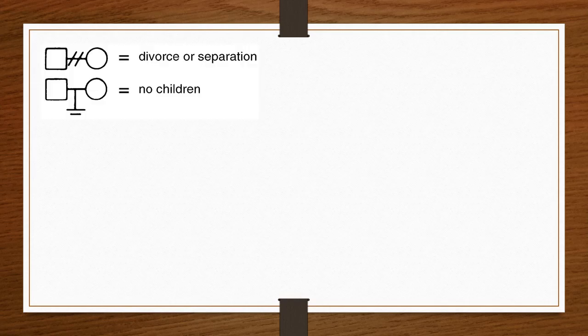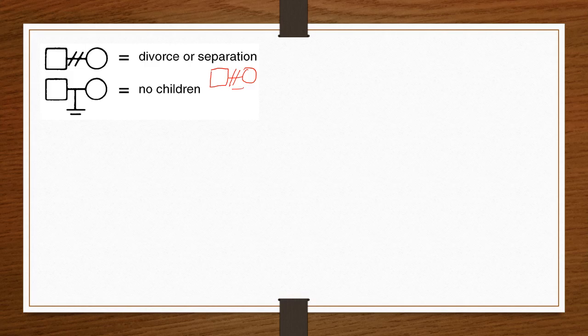A square connected to a circle represents a normal couple. If the connecting line is crossed — a cross line — it indicates a divorced or separated couple.